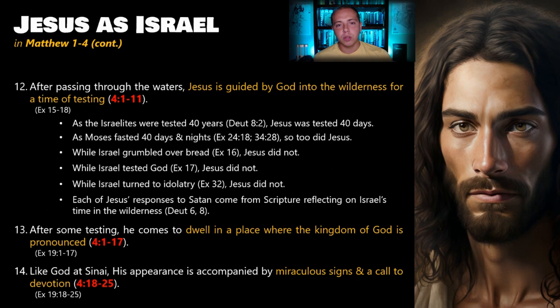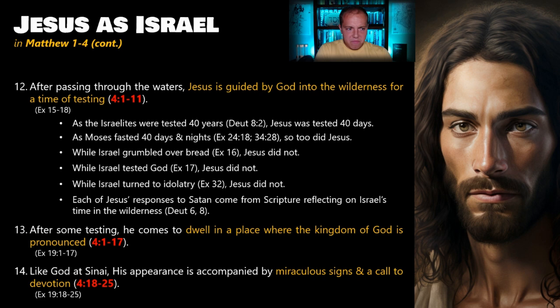Jesus quotes Deuteronomy chapter six and Deuteronomy chapter eight — Moses talking to the people of Israel saying, 'Here's the lessons you should have learned during those events in Exodus.' When Israel grumbled over bread, Jesus did not. When Israel tested God, Jesus did not. While Israel turned to idolatry, Jesus did not. Each of Jesus's responses to Satan comes from Scripture reflecting on Israel's time in the wilderness. It seems very intentional that everything Matthew is citing calls back to specific events in the history of Israel. Matthew probably knew a lot about Jesus's story that he did not share — instead, he is very intentional and selective, because all of these call back to the story he is trying to communicate.